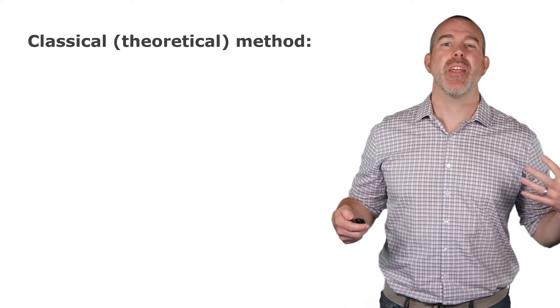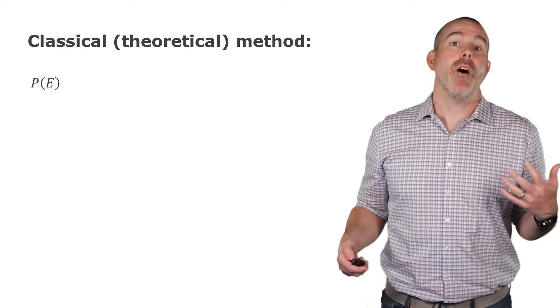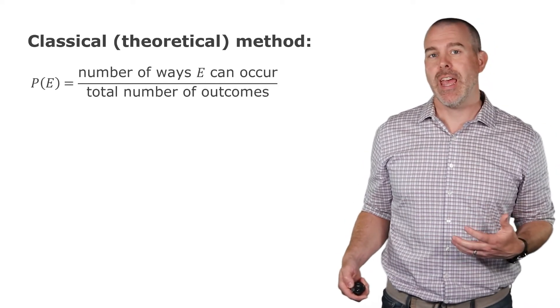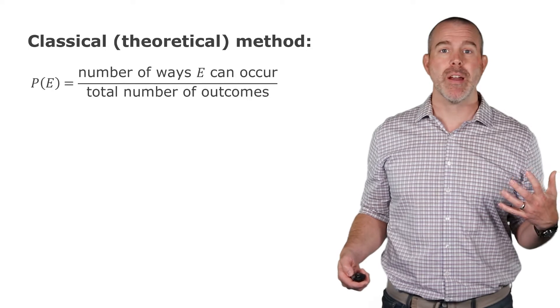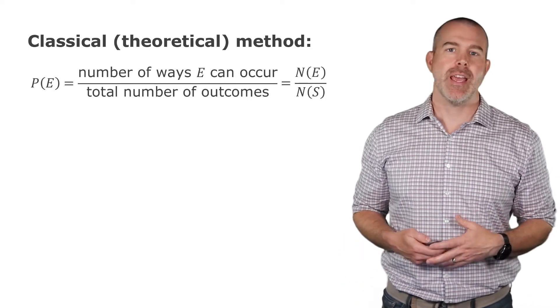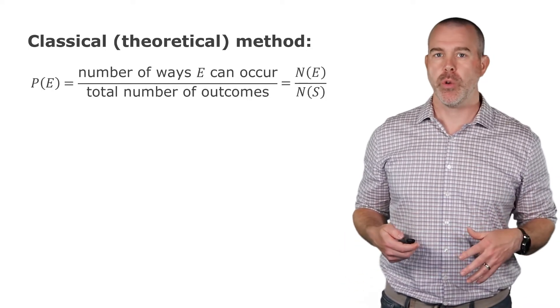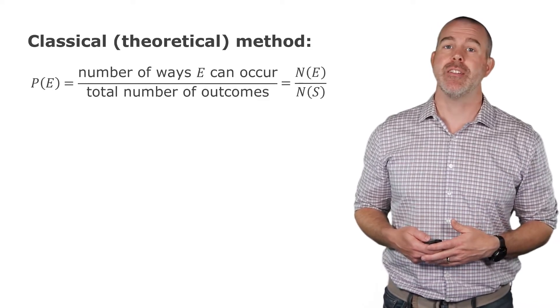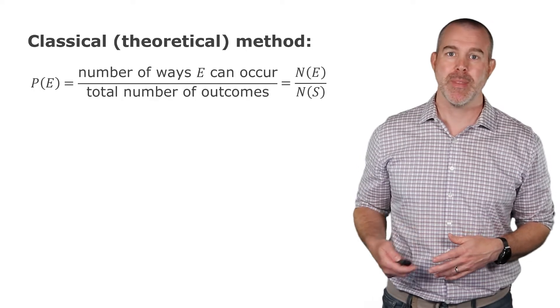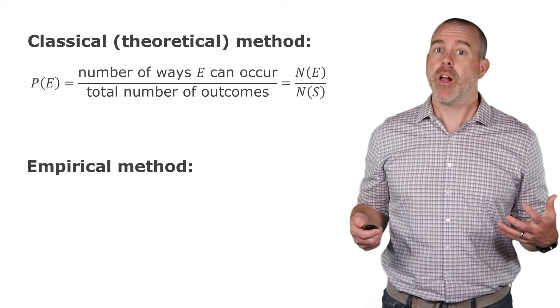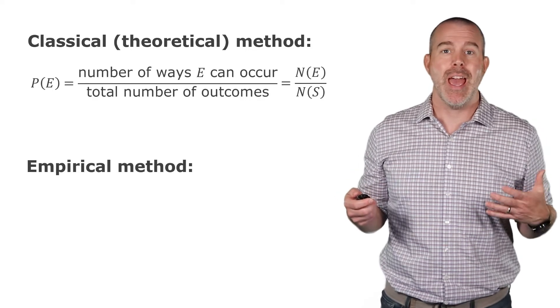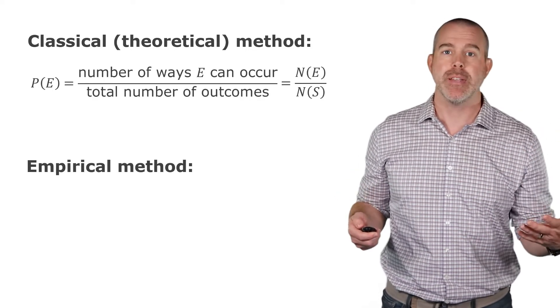In terms of calculating probability, the classical or theoretical method would be: the probability of event E is the number of ways that event E can occur over the total number of outcomes. In shorthand, that's N(E) over N(S), where we use capital S to represent the sample space. For an empirical method, this would apply if you don't have a theoretical probability and you're just going to look at what happens.